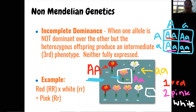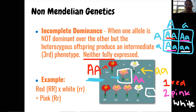This is where we see a third phenotype — it's kind of like a mixture. Imagine mixing red paint and white paint: it gives you pink. Neither trait is fully expressed, but you see a mixture of both.